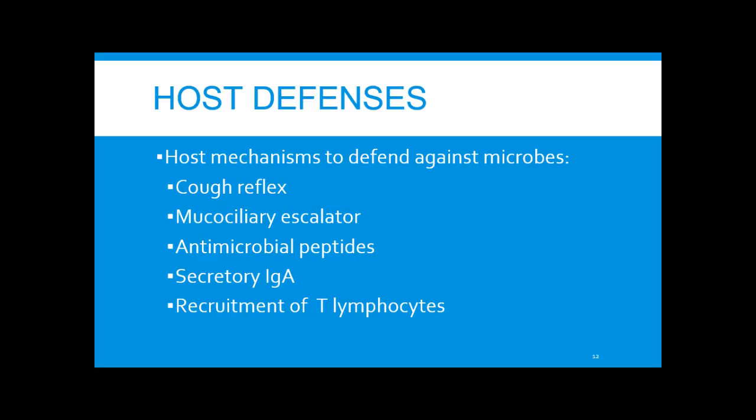Host defenses in the respiratory system include mechanisms to combat microbes: the cough reflex, mucociliary escalator, antimicrobial peptides — especially IgA — and recruitment of T lymphocytes. Some disorders can interrupt these or cause them to act defectively. In CF, for example, we have an abnormal mucociliary escalator.